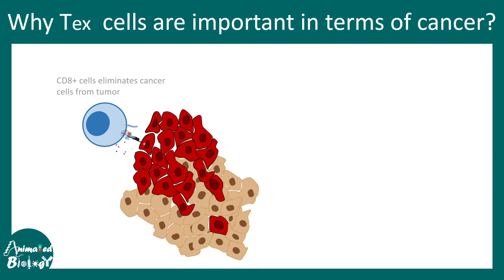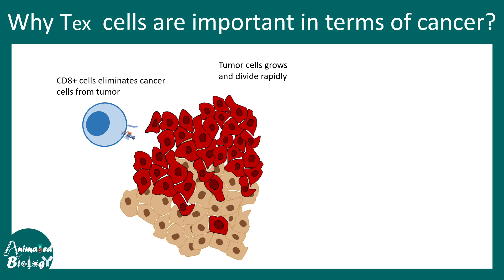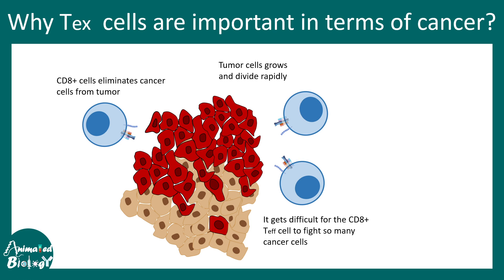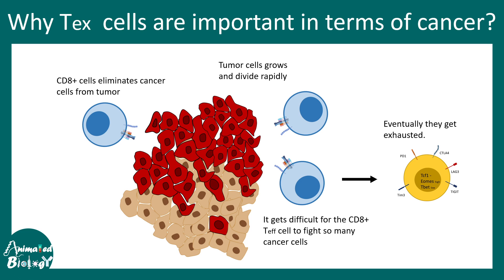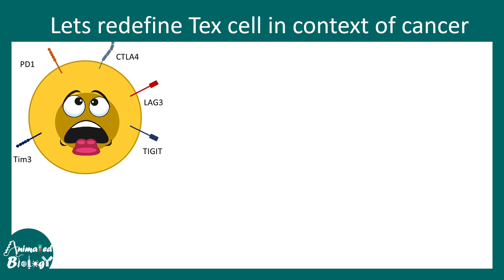To understand the biology behind this, imagine a CD8-positive T cell whose job is to kill tumor cells. But the tumor is not static — it grows and divides rapidly. After a certain point, the CD8-positive T cells cannot keep up. They try to fight back, but eventually they are also tired. The tumor cells are growing much faster than the T cells' killing rate, so they get exhausted.